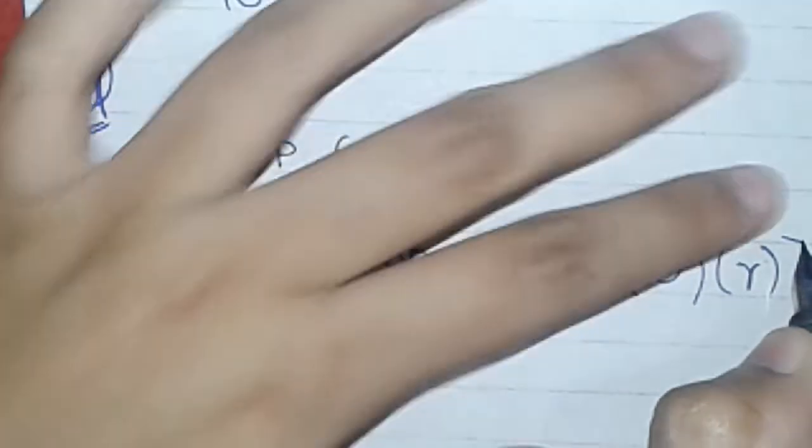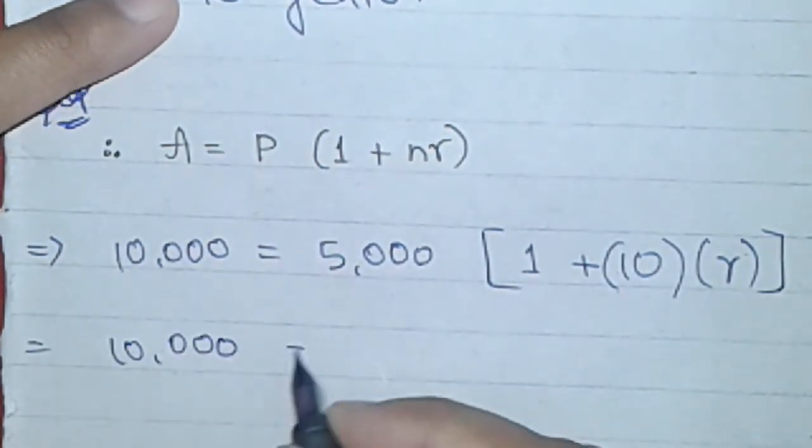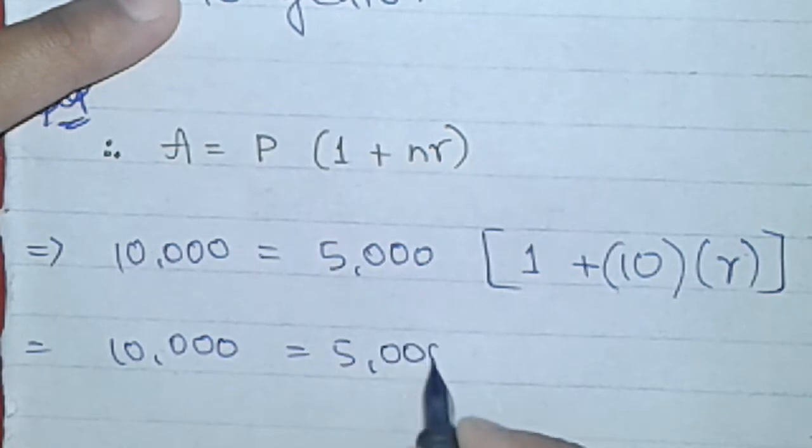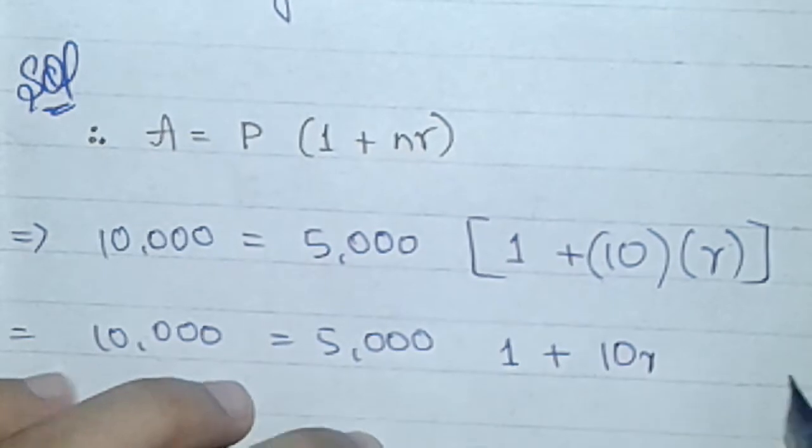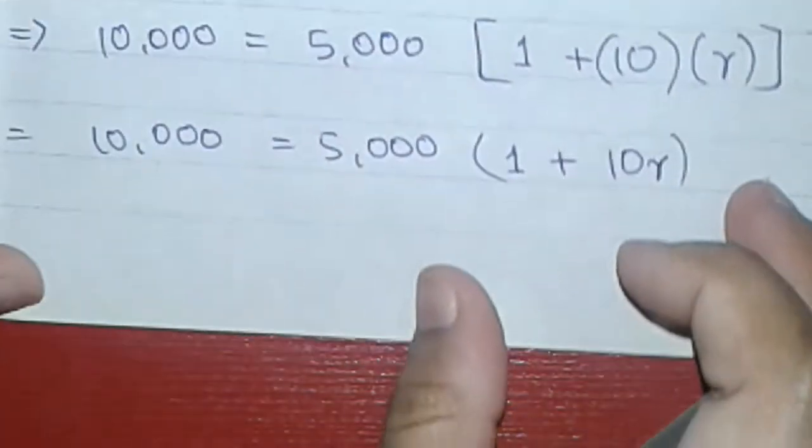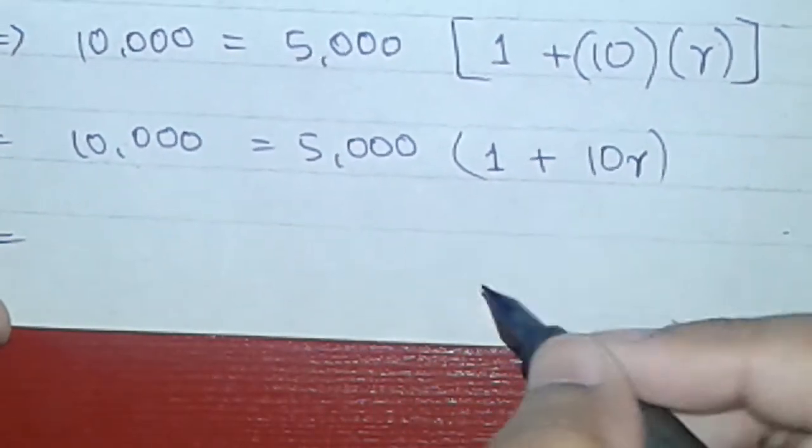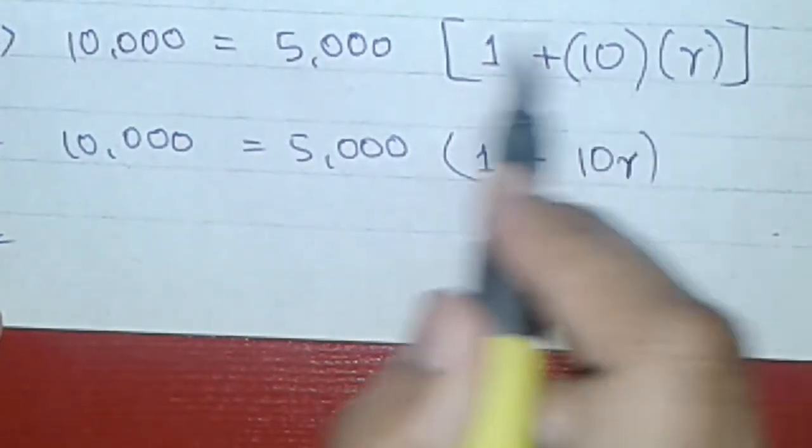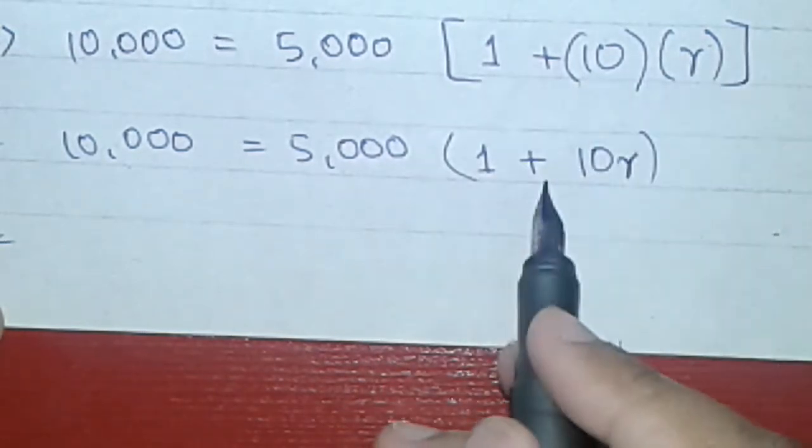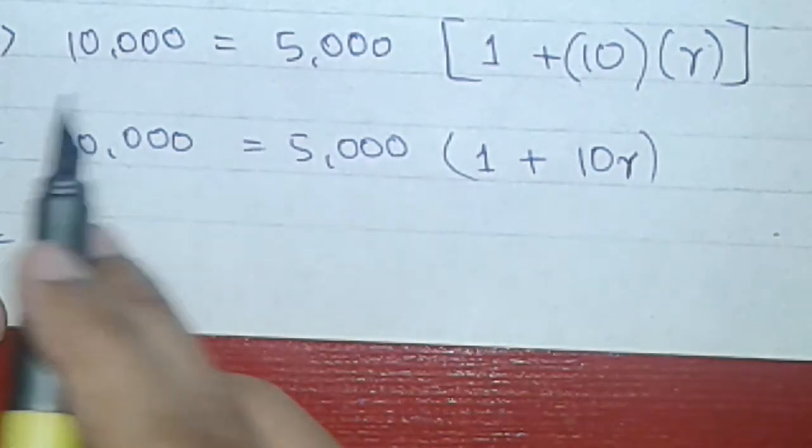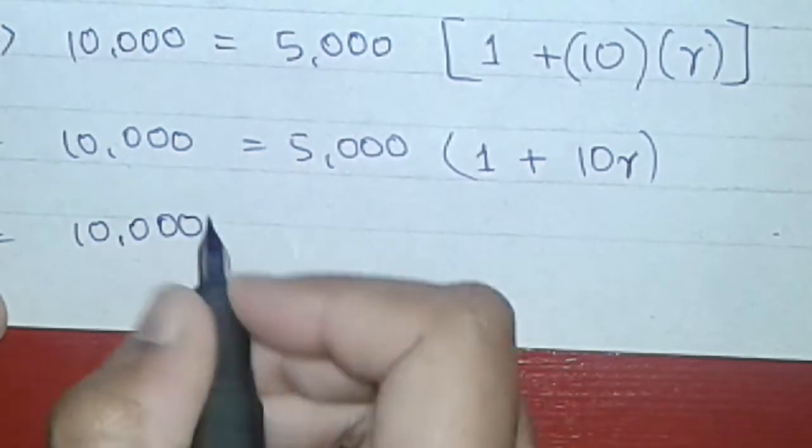So here is 10,000 equals to 5,000. We will solve the bracket according to BODMAS rule. So here is 10r multiply. Here is a bracket. So we will see this amount first.